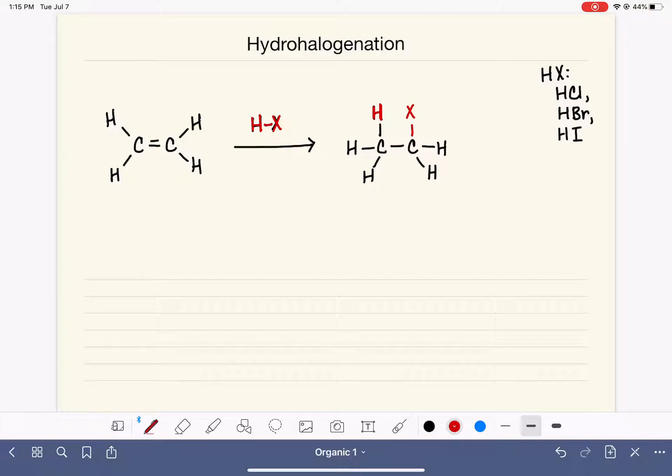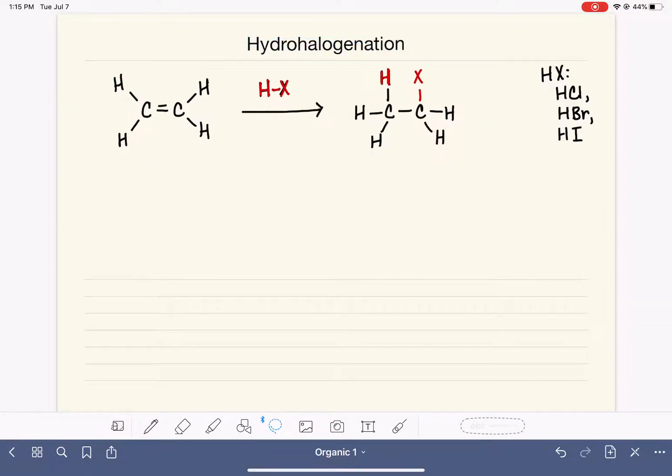The mechanism for this reaction is pretty straightforward. In the mechanism of the reaction, let's use a little bit more complicated of an alkene. So now we have some methyl groups on our alkene instead, and let's use HCl as our reactant.